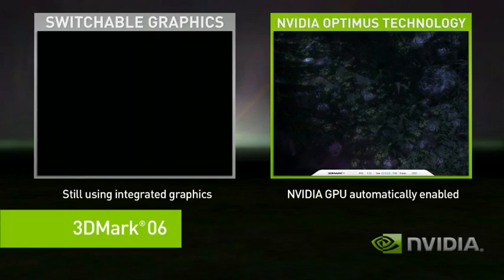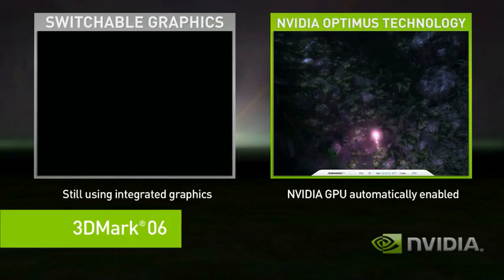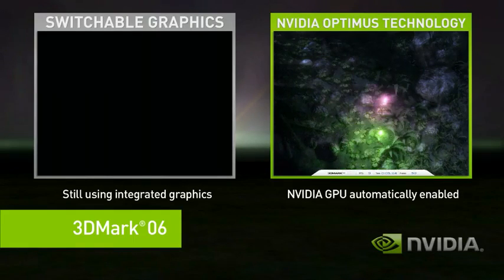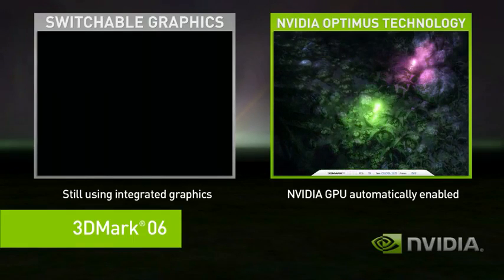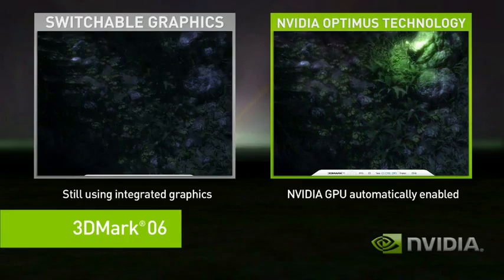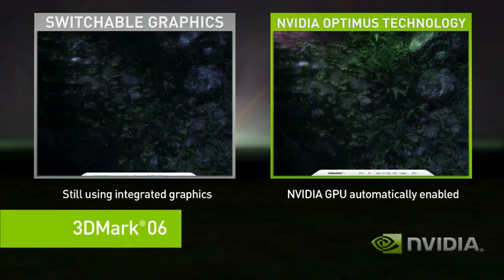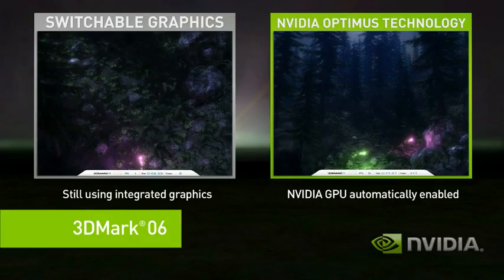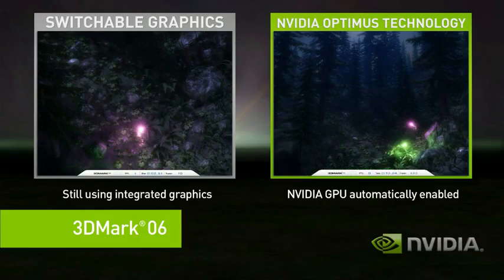Optimus, on the right-hand side, when it starts a complex application, it automatically uses the discrete GPU. The performance difference between the two is easy to see.